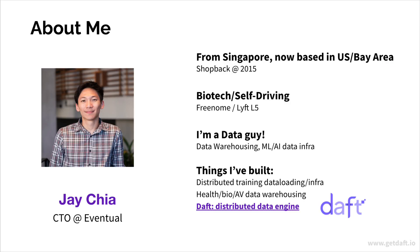Quick introduction about me. My name is Jay. I'm CTO at Eventual. I'm actually from Singapore, but I'm now based in the U.S. Bay Area. Way back when, I worked at Shopback when they were a very small startup in Singapore, and that was in 2015. My co-founder here, Sam, has challenged me today to speak in Singlish. I will try my best. I haven't given a talk in Singlish before, so we'll see.